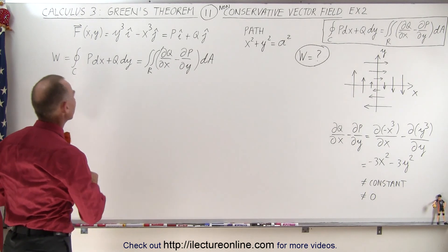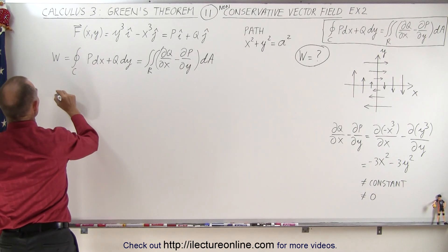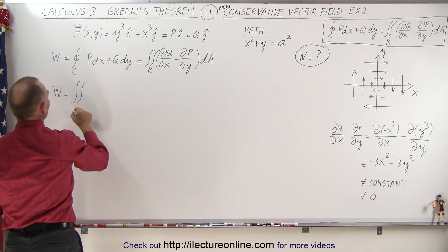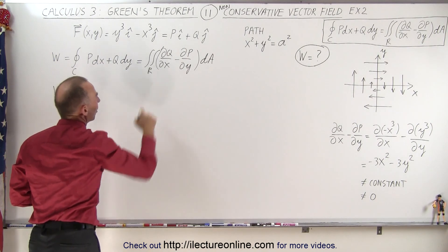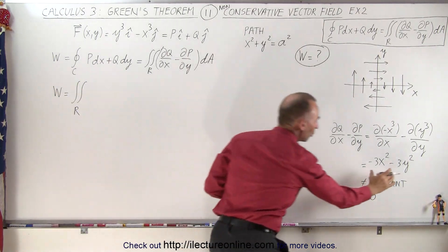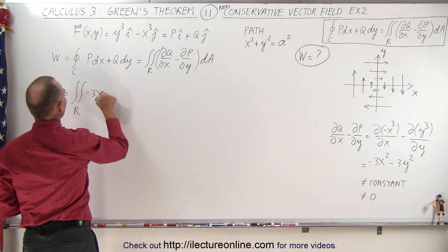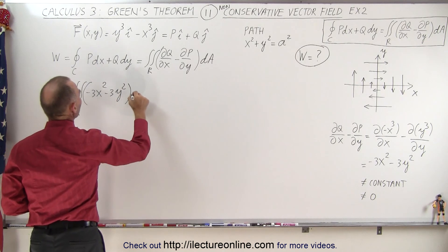So let's go ahead and find the work done by solving the right side of Green's theorem. So work done is equal to the double integral over the region of the partial of q with respect to x minus the partial of p with respect to y, which we got right here. So let's put that in there. That's minus 3x squared minus 3y squared times the area dA.